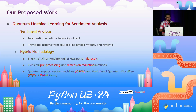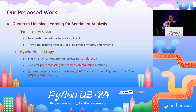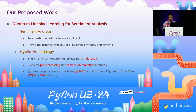Our work applies quantum machine learning to sentiment analysis — interpreting emotions or sentiment from digital text, giving better insights from everyday digital sources like emails, tweets, reviews, and news portals. We use two datasets: an English dataset from Twitter and a Bengali dataset from a Bengali news portal. We combine classical methods — mainly preprocessing and dimension reduction using PCA and wavelet transform — with quantum methods using pre-built models like the quantum support vector machine and the variational quantum classifier, which are available in the Qiskit library.